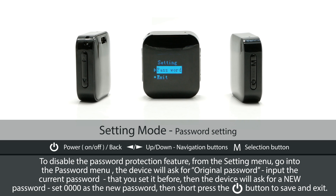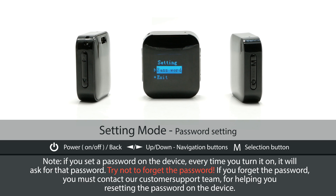The device will ask for the original password. Input the current password that you set before, then the device will ask for a new password. Set 0000 as the new password, then short press the power button to save and exit. Note: if you set a password on the device, every time you turn it on it will ask for that password. Try not to forget the password. If you forget it, you must contact our customer support team to help you reset the password.